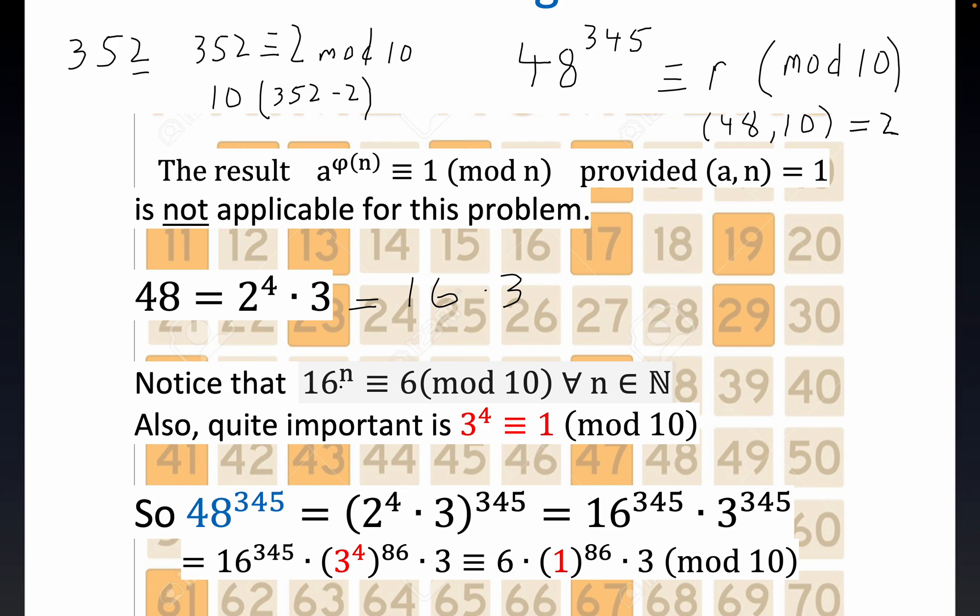I'm going to state this as a fact, but it follows quickly from something that may be even more obvious: 6 raised to the n is always going to be congruent to 6 mod 10.